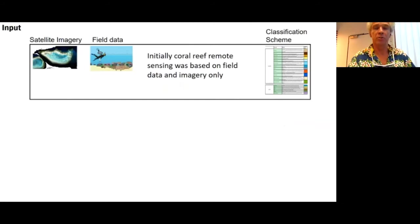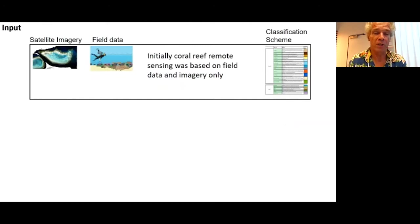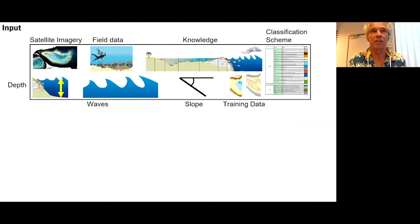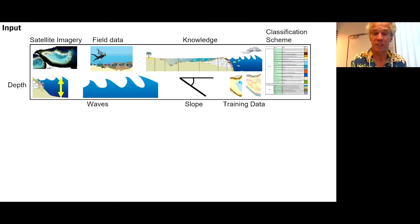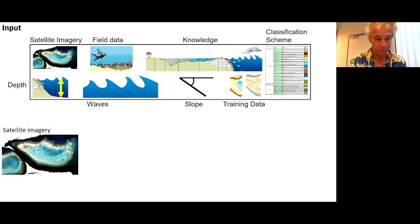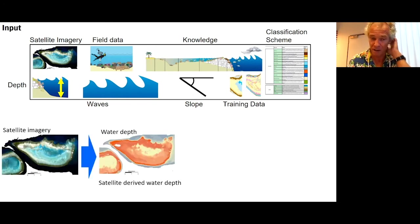With satellite and field data and a good descriptive classification scheme, we can start mapping. Now we're doing more — using our knowledge that reef crest is the most impacted part of the reef and neighbors a reef slope. So if a reef crest is not neighboring a slope, it's probably misclassified. We use our understanding of the reef: we can get depth from satellite imagery, waves from the depth, and slope from the depth. We use these together with training data from our own field data or globally distributed field data. The satellite imagery provides really high-resolution water depth.